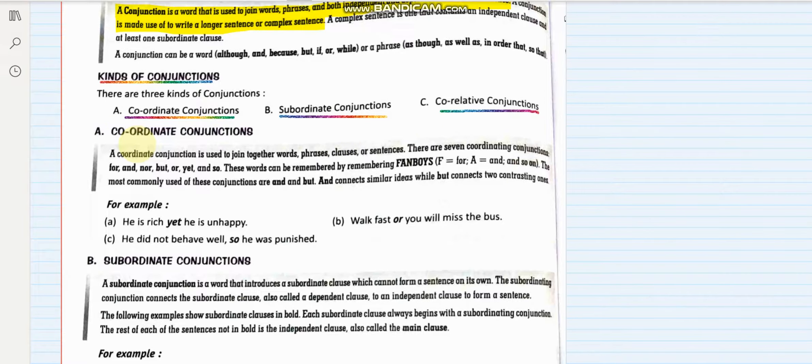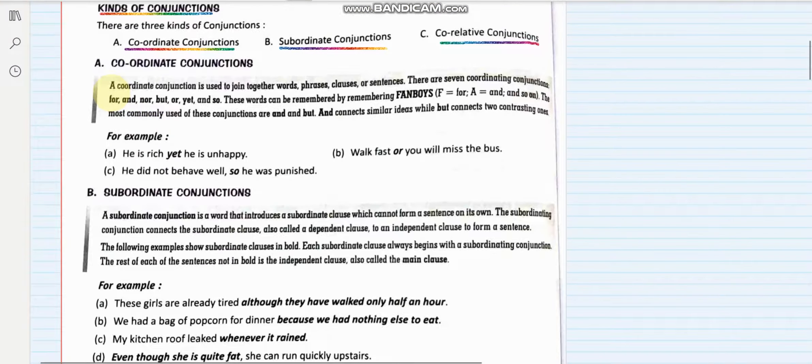Let us see what are coordinate conjunctions. A coordinate conjunction is used to join together words, phrases, clauses, or sentences like a normal conjunction. There are seven coordinating conjunctions. We can remember these conjunctions using this short form: FANBOYS.